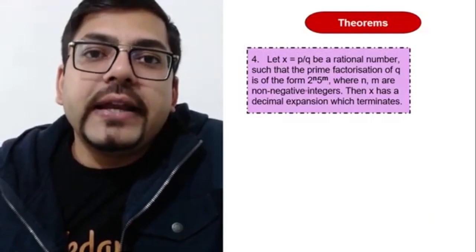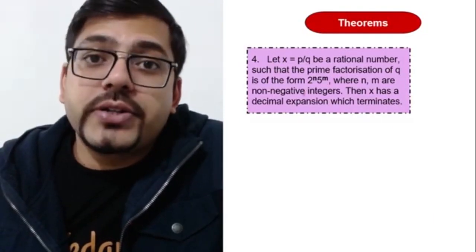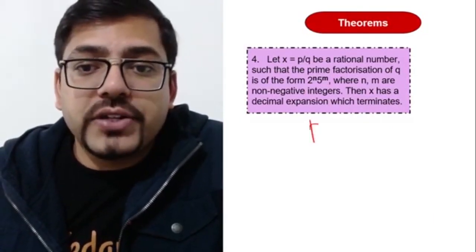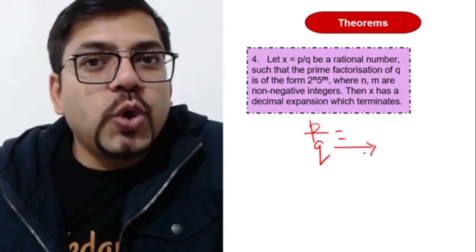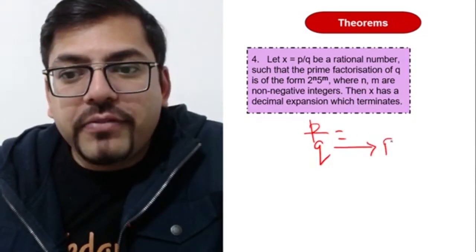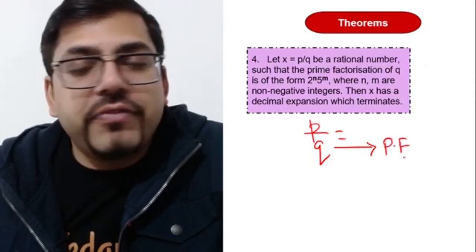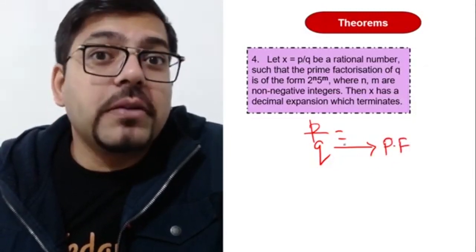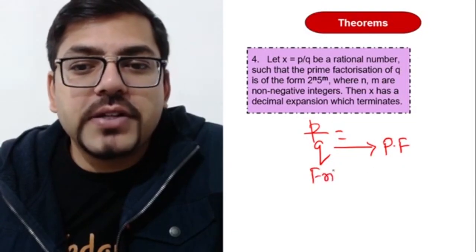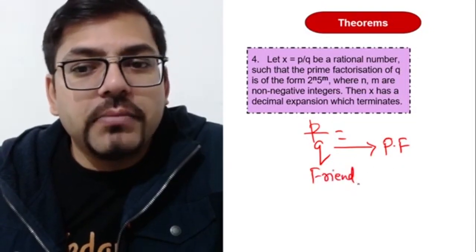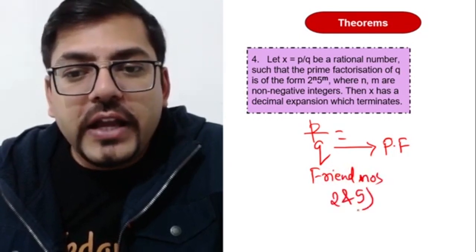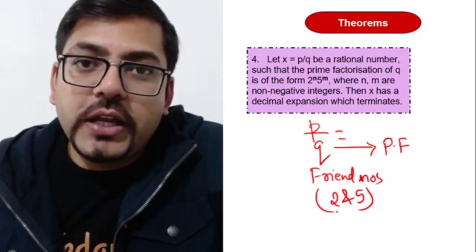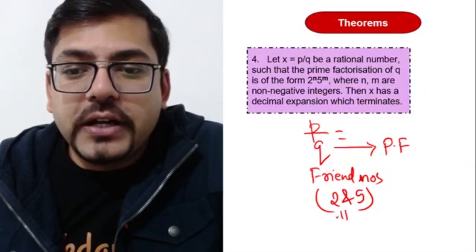Now moving ahead, so this is the entire thing. And the last thing which is important is finding the decimal digits. Like if you have any fraction, say for example p by q, then you have to pay attention over the denominator - their prime factorization. So in that prime factorization, if the numbers are friend numbers - do you remember that concept of friend numbers I had already given you? Friend numbers simply means 2 and 5.